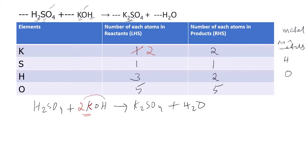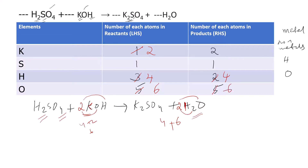With 2 in front of KOH, hydrogen becomes two times two equals four on the reactant side, but only two on the product side, so I put a coefficient of 2 in front of H₂O to make four. Now checking oxygen: four plus two equals six on the reactant side, and four plus two equals six on the product side. Sulfur is already balanced, so the equation is fully balanced.